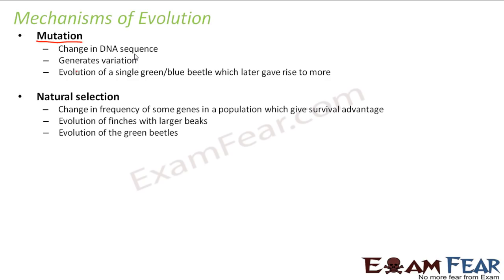The next mechanism is natural selection — very important. Discussion on evolution will remain incomplete without it. It is the change in frequency of some genes in a population which give survival advantage. Nature selects something for its own good. For example, the green color of the beetles was a survival advantage because crows could not eat them. So nature selected the green color, and the number of green beetles kept on increasing.